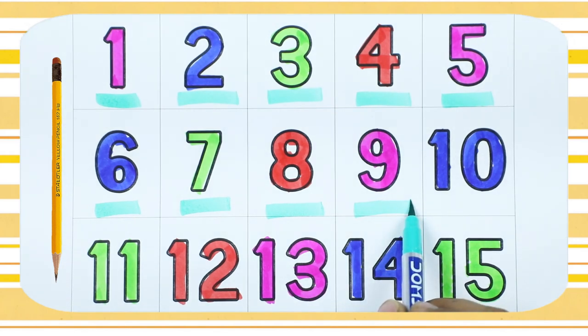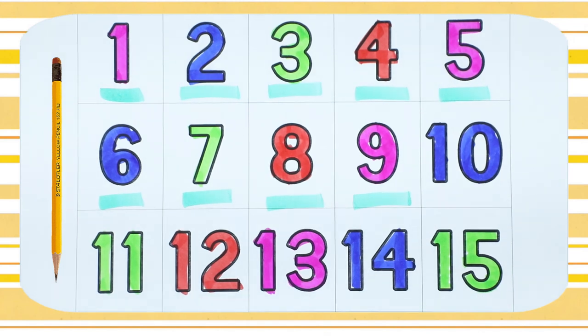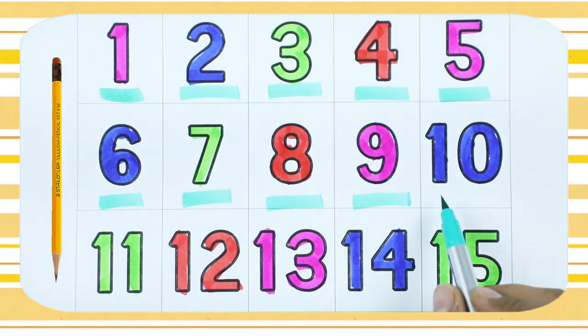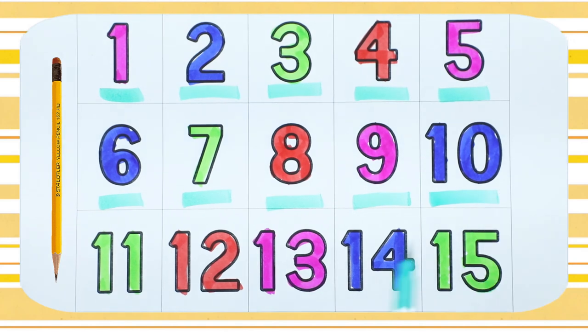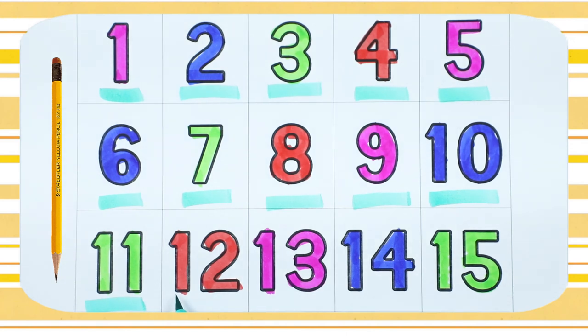Number 9, right. 1-0, 10, it's blue color. 1-1, 11, which color is this? Green. 1-2, 12, it's red color.